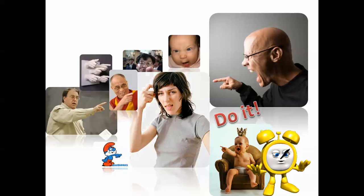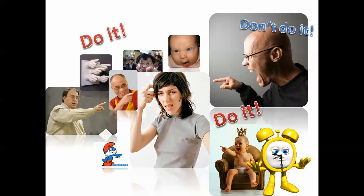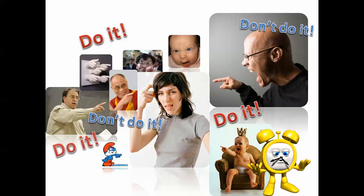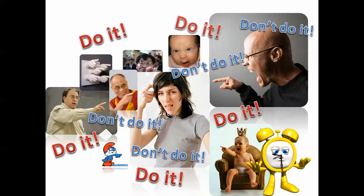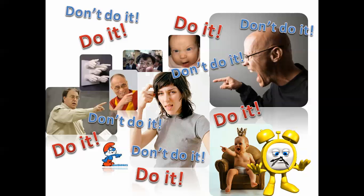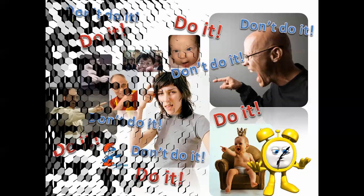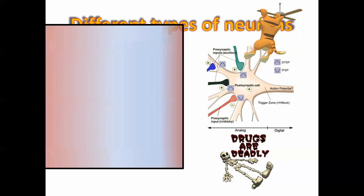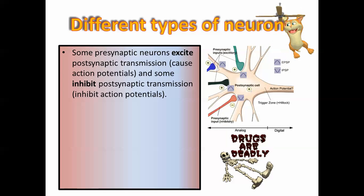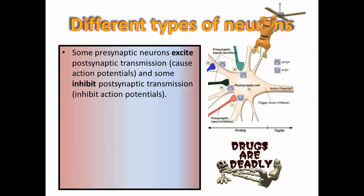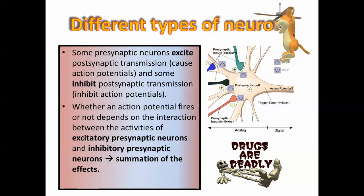Your body system is telling you all kinds of things — it's like people telling you, like teenage angst: do it, don't do it, do it, don't do it. All these different messages you receive externally, your body and brain are actually doing this as well. You have neurons telling you to fire particular action potentials, and then there are particular neurons telling you not to fire. They're called excitatory and inhibitory synapses.